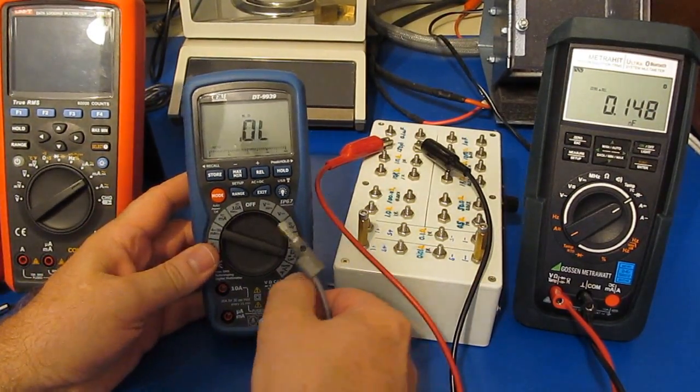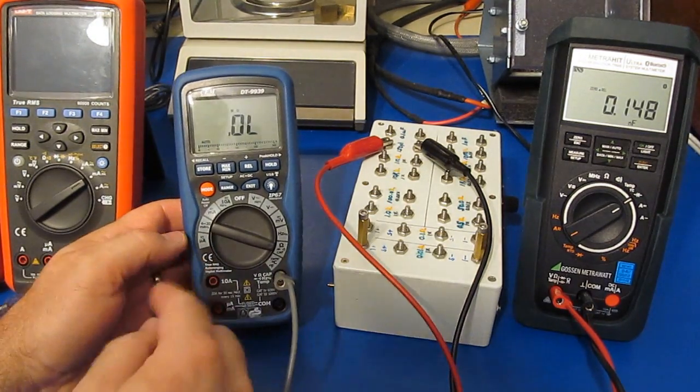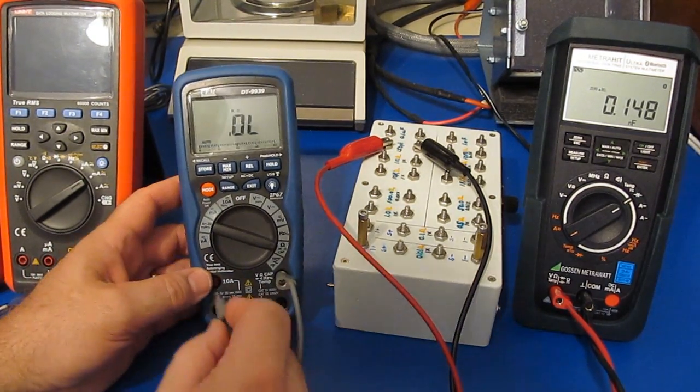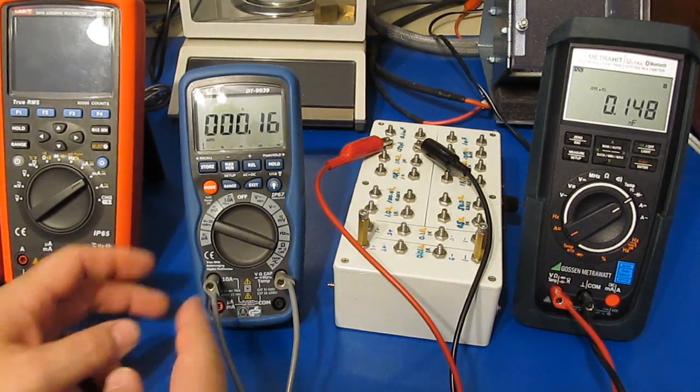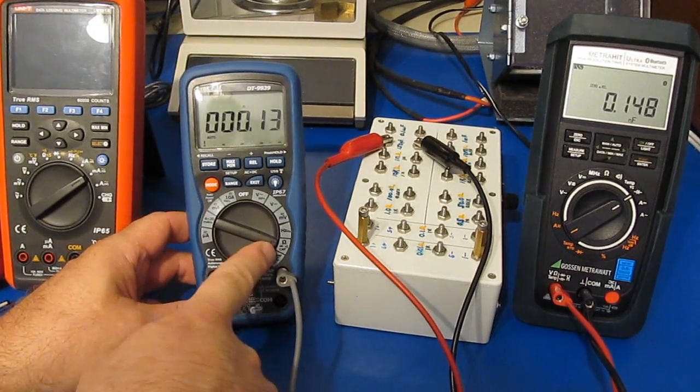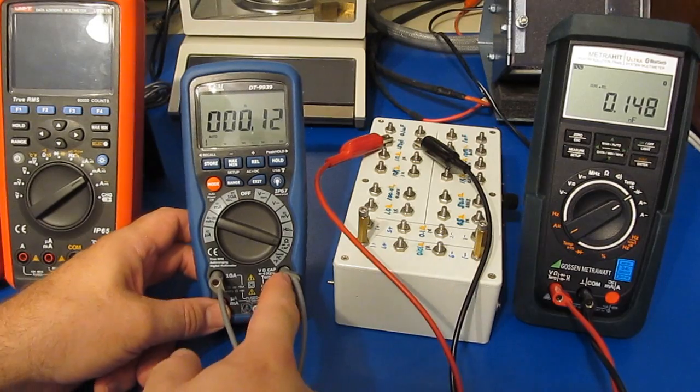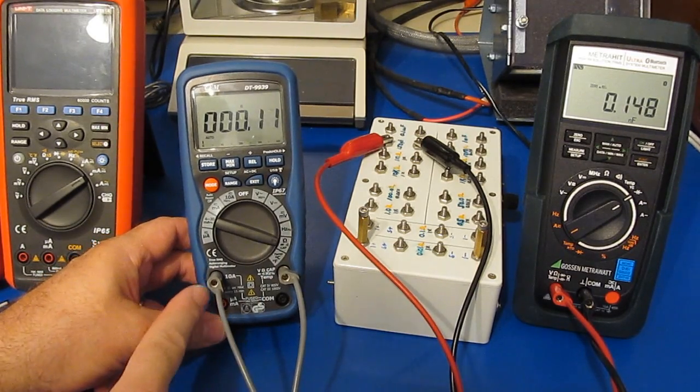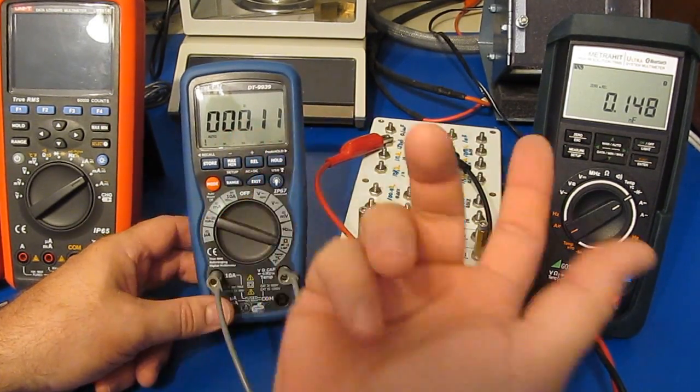So one of the problems you can have with a lot of meters is they have a fuse inside. It's very rare for me personally that I would ever use the internal current shunts on a meter. You can see if I have the meter in the resistance mode, I can attach between the voltage input and the fuse input and you can see it basically reads a dead short.